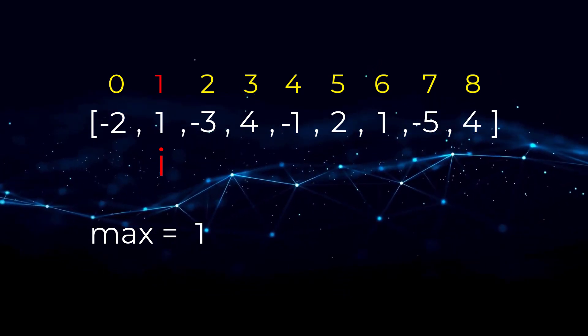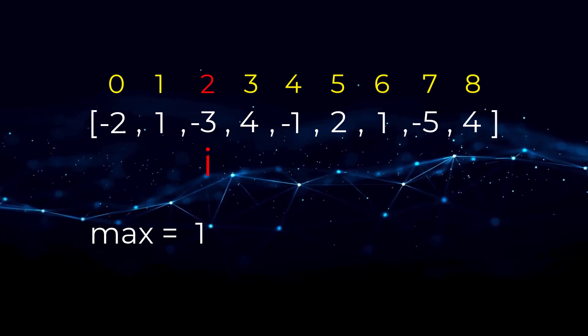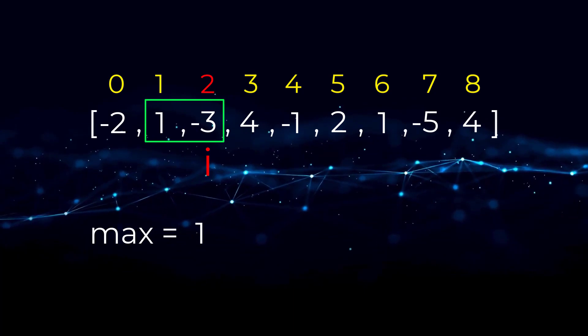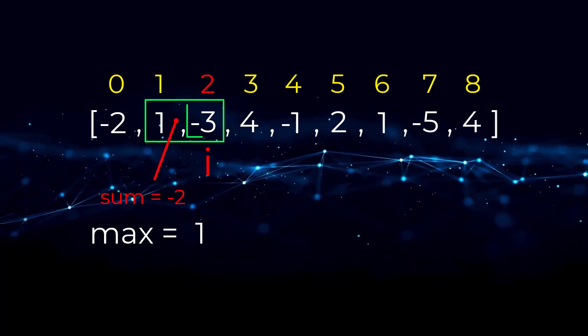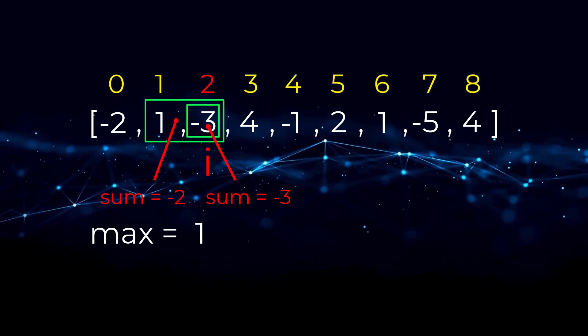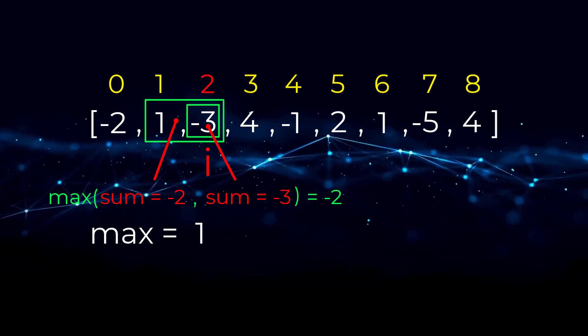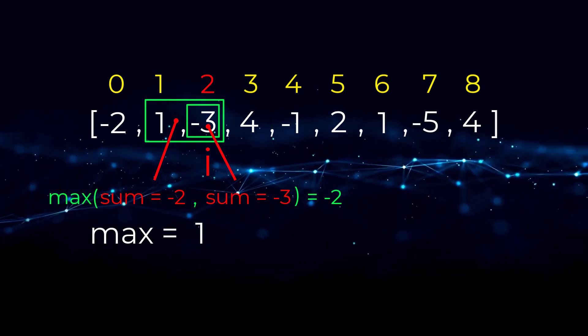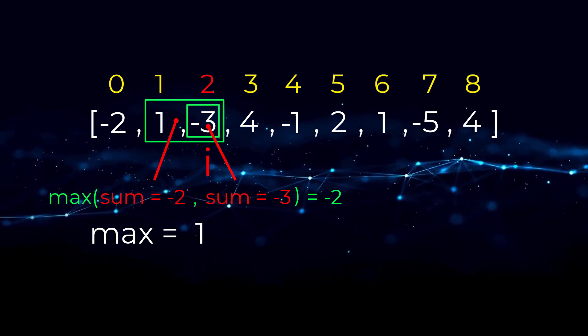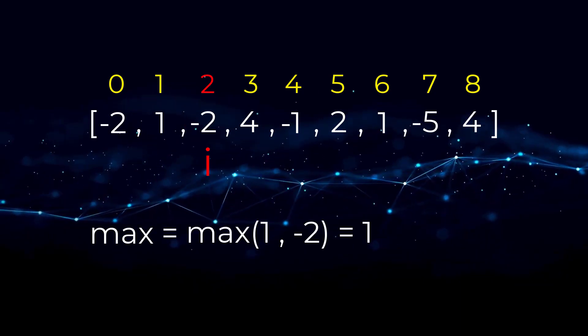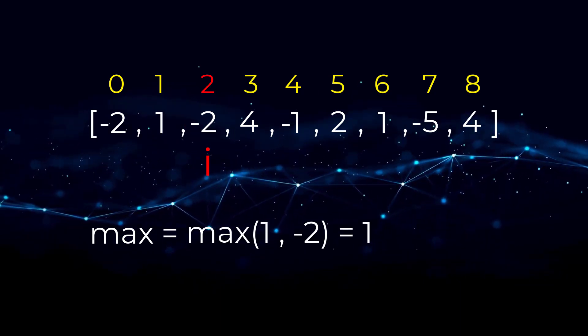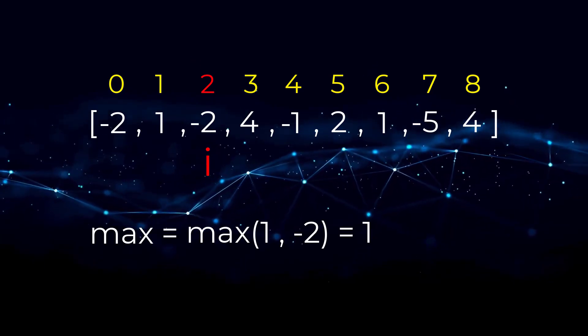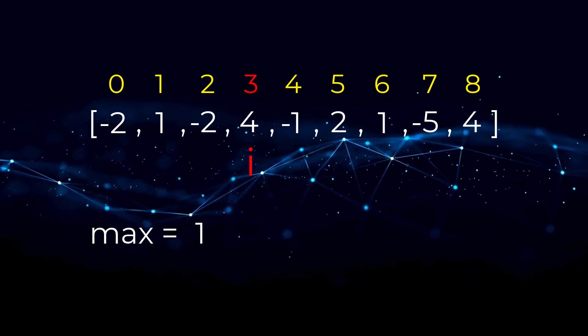So next, we're gonna move our pointer to negative three and compare the subarrays. Negative three plus the previous of one would be negative two. Negative three is also its own subarray, but when we compare the two, negative two is larger than negative three. Thus, we're gonna update our current position to have the larger subarray sum of negative two. We compute the max between our current position and max. One is greater than negative two, so we are going to do nothing.